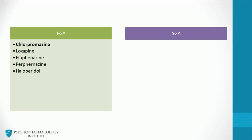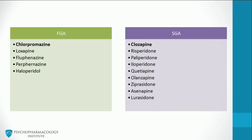Here are some examples of first and second generation antipsychotics. Chlorpromazine is highlighted because it is the prototype for the phenothiazine class of drugs. It was the first drug used as an antipsychotic and is still in use. Other drugs in this group include loxapine, fluphenazine, perphenazine, and haloperidol. First generation antipsychotics are classified according to their chemical family, which predicts their clinical profile.